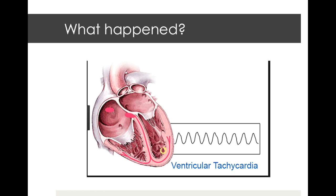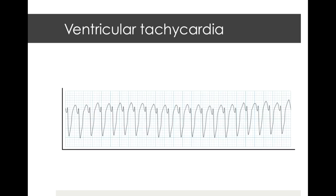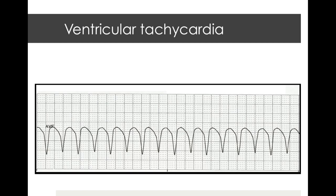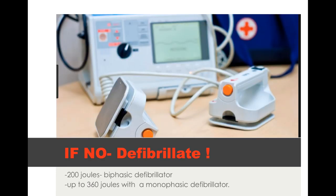Here we are in ventricular tachycardia. VTAC is when that foci really took over — a sustained instance — and the patient may or may not have a pulse. All aberrant beats in a row, the foci is irritable and firing, took over the SA node, compromising cardiac output. The question we ask when patients are in VTAC is: do they have a pulse? If they do have a pulse, we treat with amiodarone 150 milligrams over 10 minutes. If they don't have a pulse, we defibrillate with 200 joules on a biphasic defibrillator.